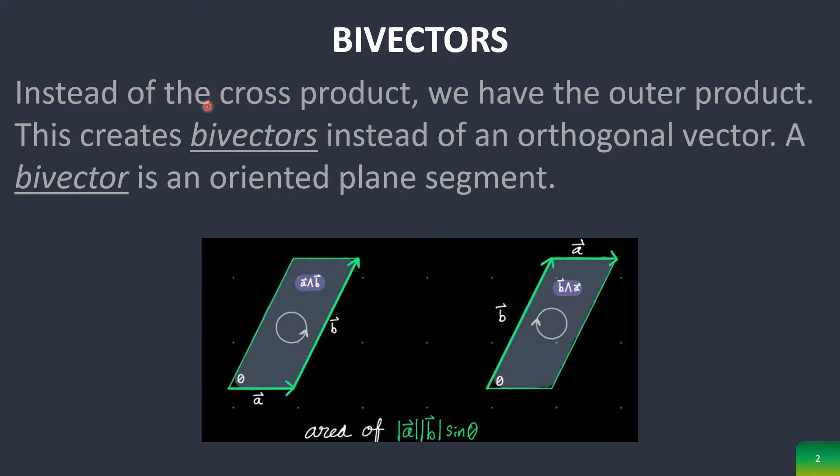This creates something called a bivector instead of an orthogonal vector. So instead of having a new vector come out of the two original orthogonal vectors that you're crossing together, you have a new bivector, which is a plane segment, and you can actually see that it has the same area that we talk about in section 1.3. But you'll also notice that these are non-commutative, or they are dependent on which ones you product first.